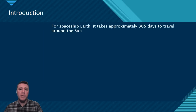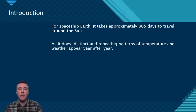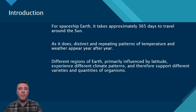It takes approximately 365 days for Earth to complete its annual trip around the sun. As the planet and its inhabitants progress through this year-long journey, distinct regional climate patterns involving temperature and precipitation begin to emerge. These patterns are primarily connected to specific regions based on east-west lines of latitude, and the distribution of organisms is influenced by these climate patterns.